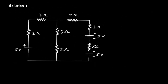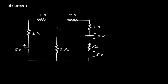First of all, we will simplify this circuit. Here we can see this 5 Ohm and this 5 Ohm are connected in series. So in series, they will be added. This will be 5 Ohm plus 5 Ohm is equal to 10 Ohm.